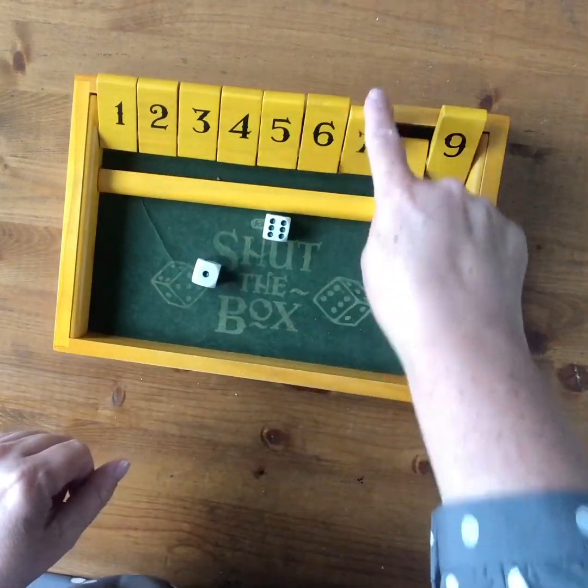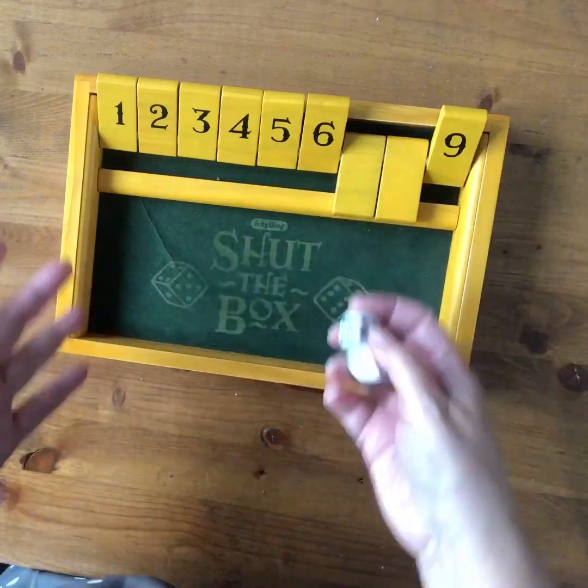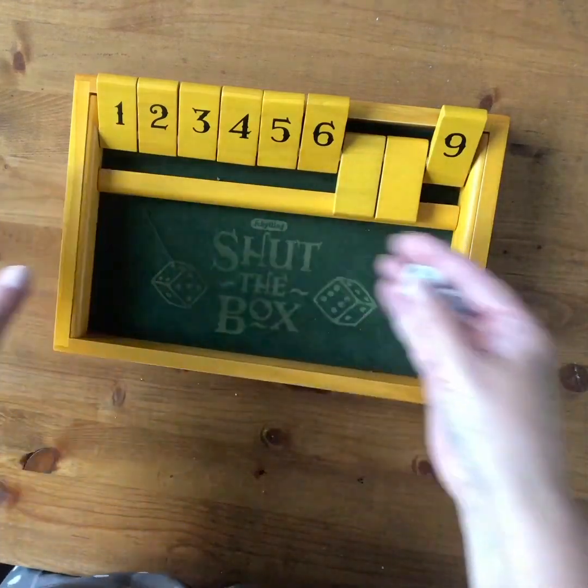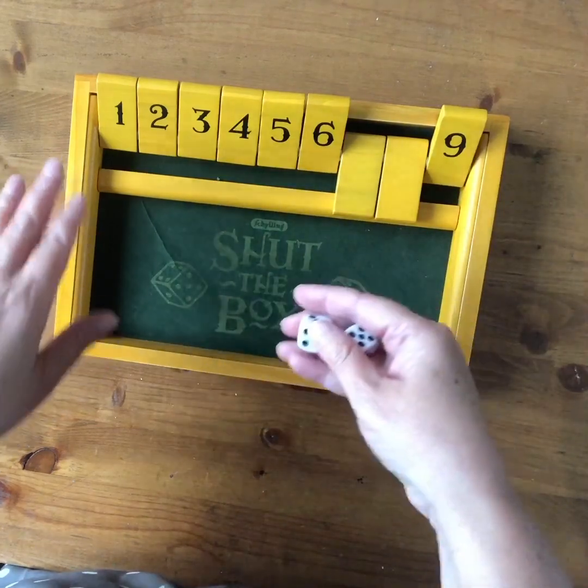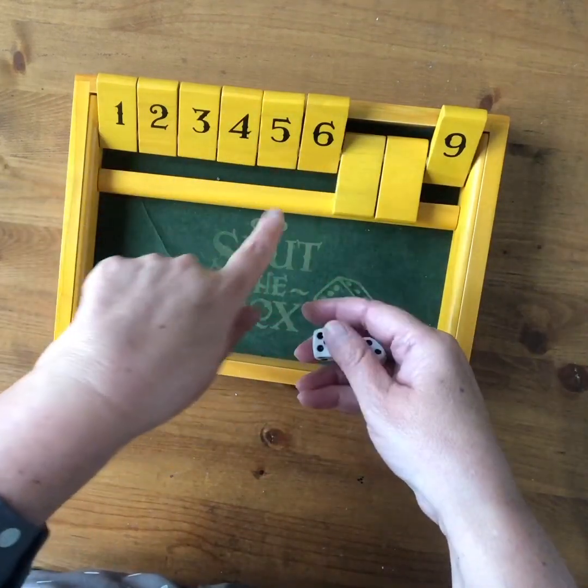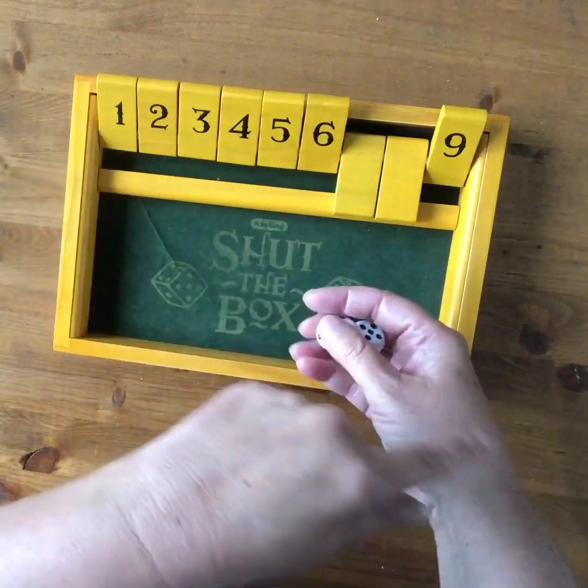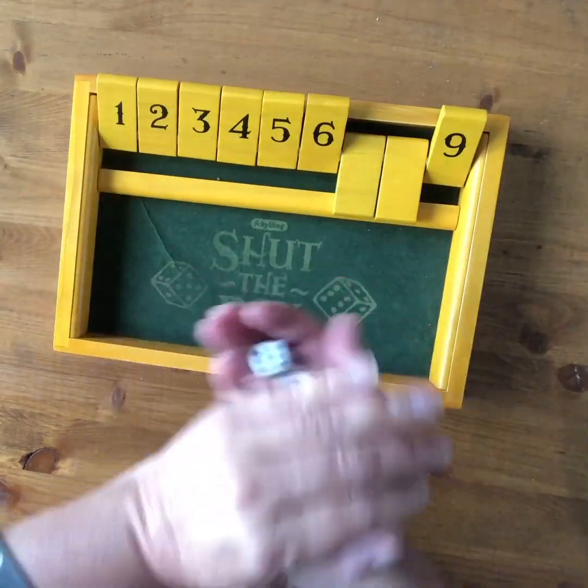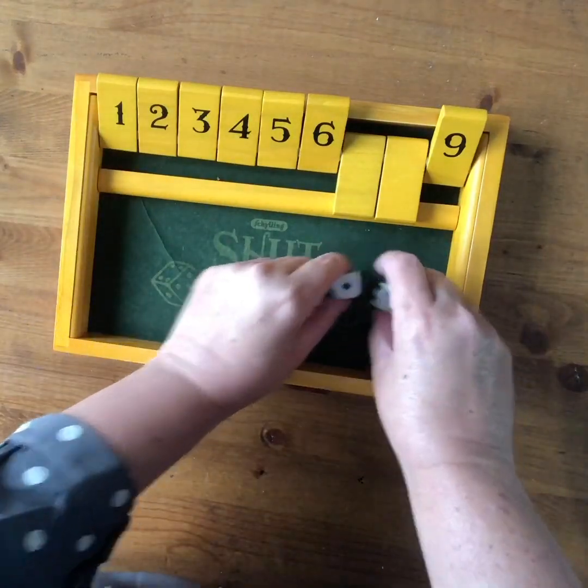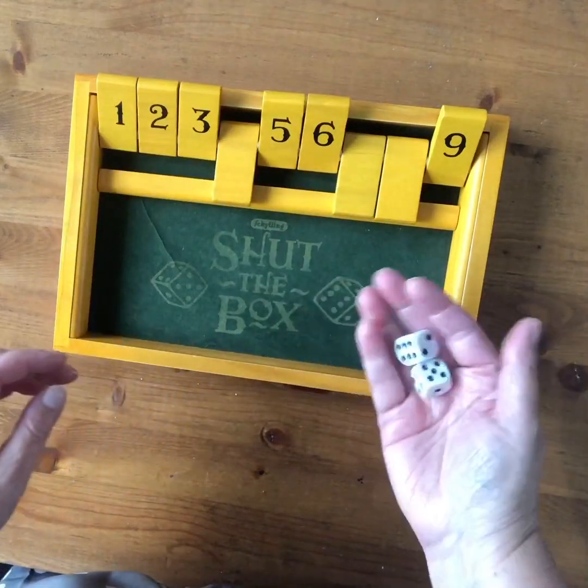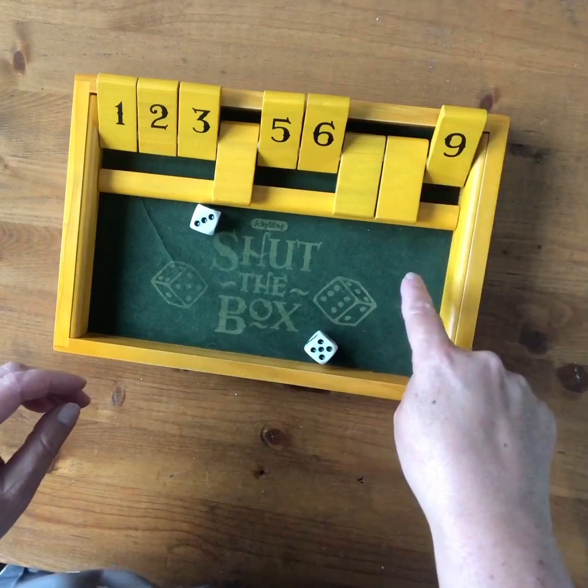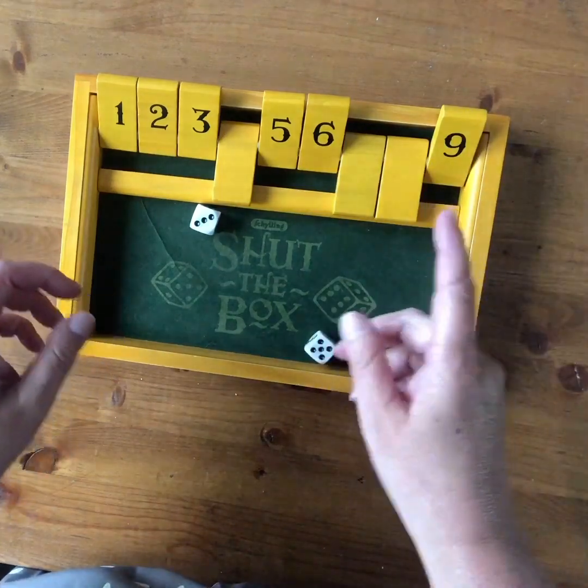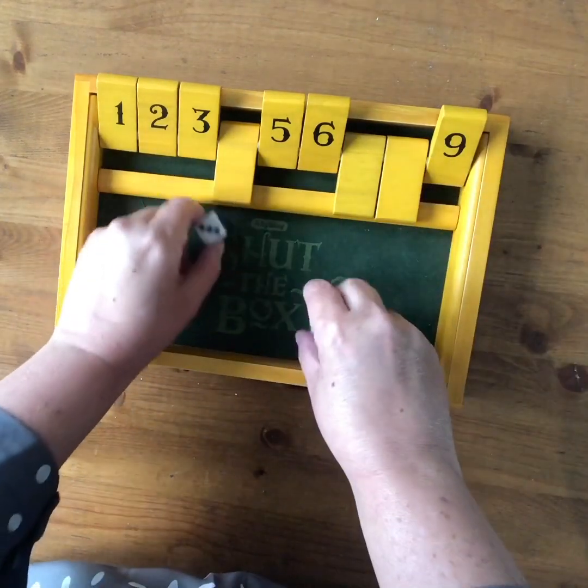This time I have a seven, I'm going to turn down the seven. The goal of the game is to get the lowest score at the end, and the score is determined by how many tiles are left up, and then you add those up to get your score. So I have a four, I'm going to turn down a four, and then one of the rules of shut the box is once you have the seven, eight, and nine turned down, you can only use one dice or you can use two dice, it's your choice.